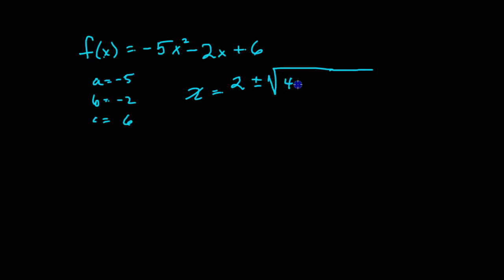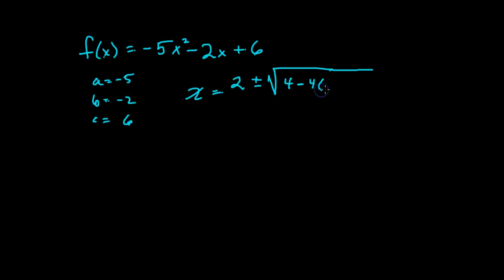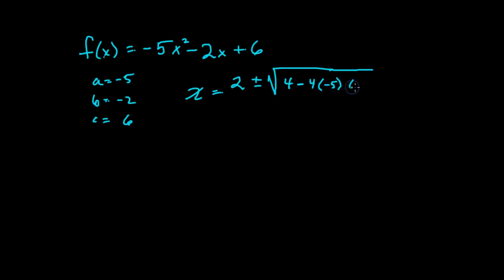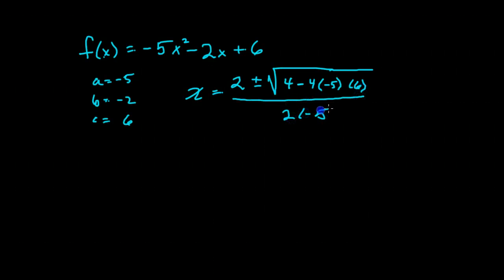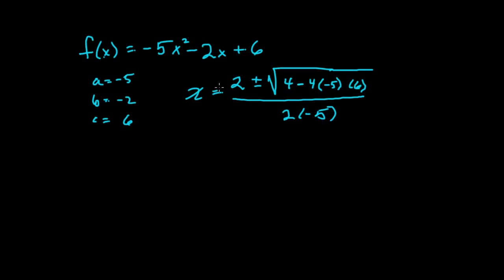2 squared is 4 minus 4 times a is negative 5, times c is 6, and all of that goes over 2 times negative 5.